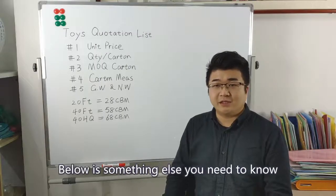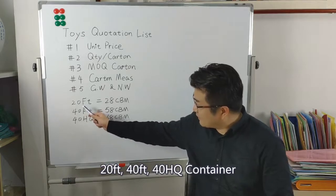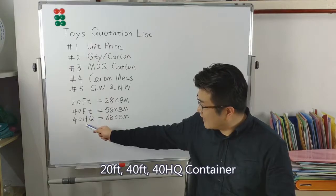Below is something else you need to know. There are three kinds of containers: 20 foot container, 40 foot container, and 40 high cube container.